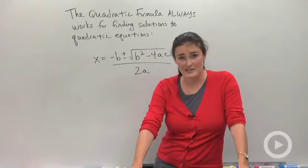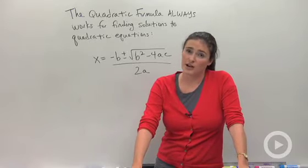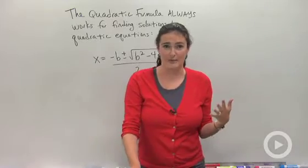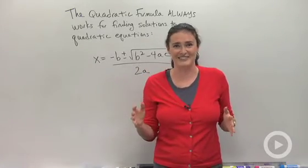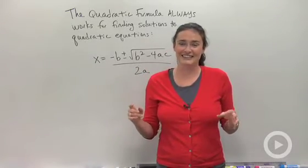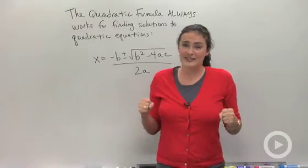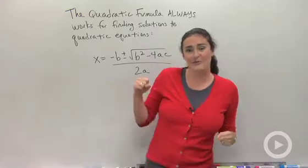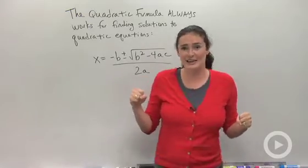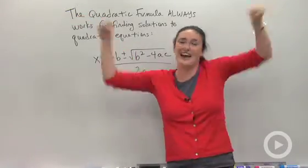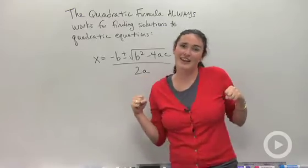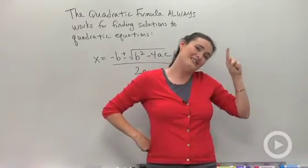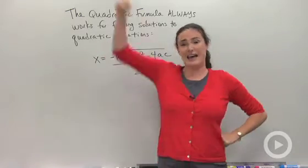Another way you could do this is Jingle Bells. So this works better seasonally. If you guys are learning this around the holiday season, you might want to choose the Jingle Bells option. Ready? I think I know this one. Okay, here we go. X equals negative b plus or minus square root of b squared minus 4ac all divided by 2a. Hey! X equals negative b plus or minus square root of b squared minus 4ac all divided by 2a. Hey!